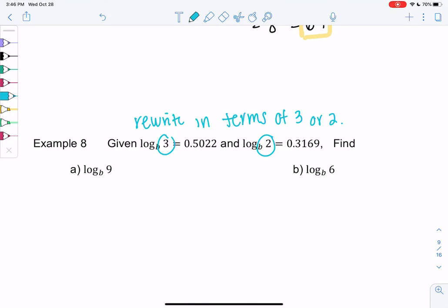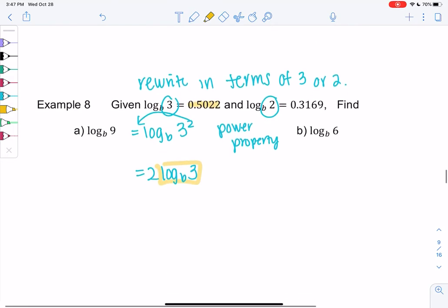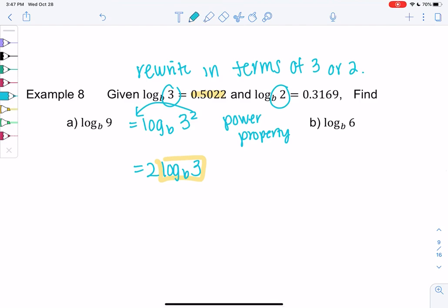So I would rewrite log base b of 9 as log base b of 3 squared. Which we almost know because we can use the power property to bring the 2 out front. And we get 2 log base b of 3. And now we can solve this because we know log base b of 3 is 0.5022. So log base b of 9 would just be 2 times that.